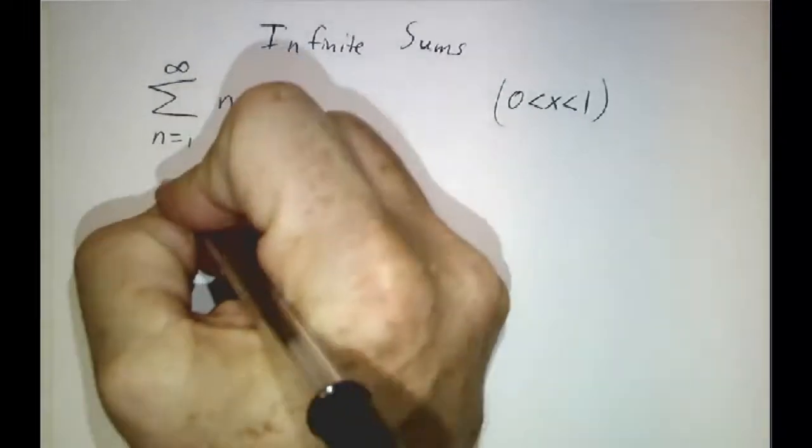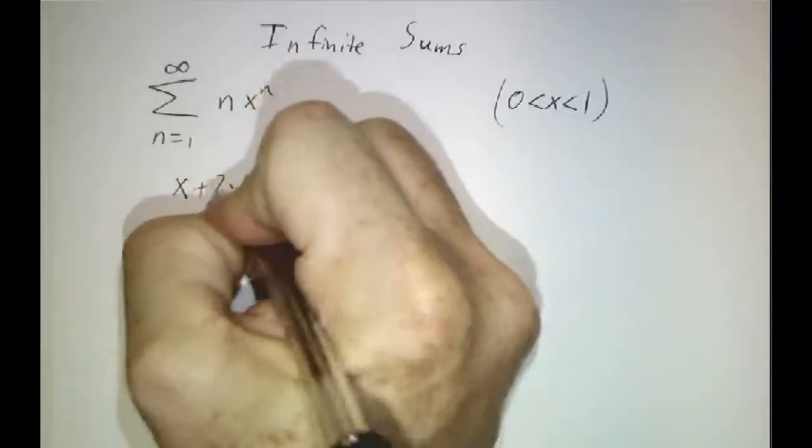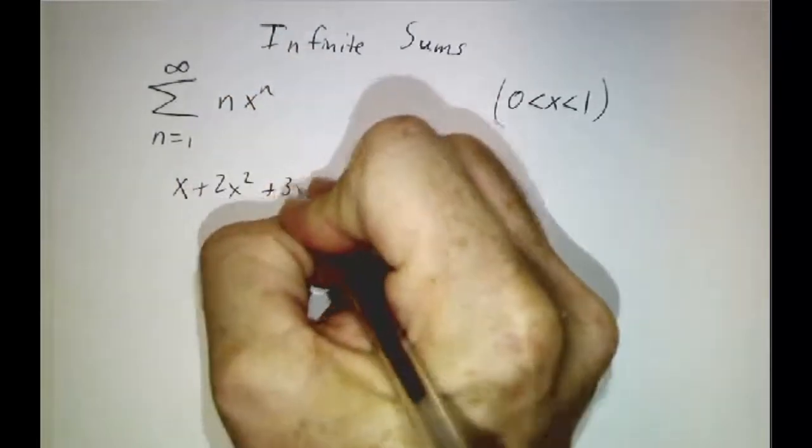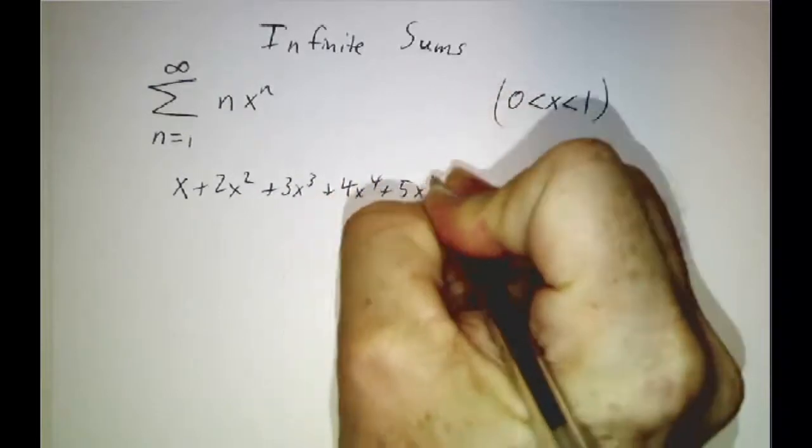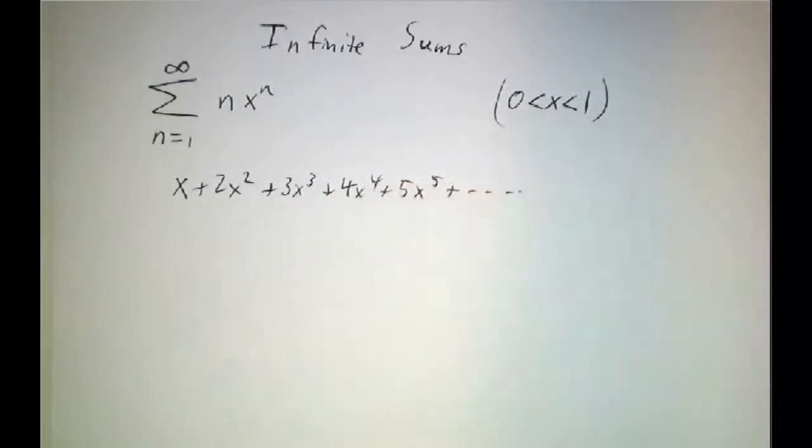So to spell that out, that means we want x plus 2x squared plus 3x cubed plus 4x to the fourth plus 5x to the fifth and so on. The question is what does that add up to?